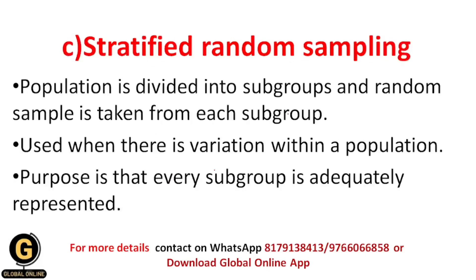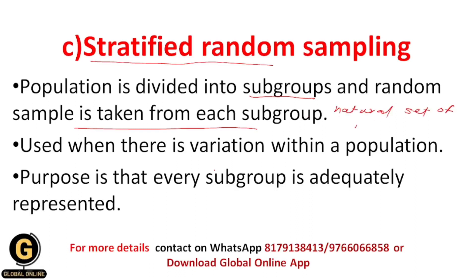The third type is stratified sampling — a modified random sampling. In this technique, the population is divided into subgroups and a random sample is taken from each subgroup. These subgroups are a natural set of items and might be based on company size, gender, or occupation. It is used when there is a great deal of variation within a population. You choose some subgroups and take a random sample from them. The purpose is that every subgroup is adequately represented based on their characteristics.